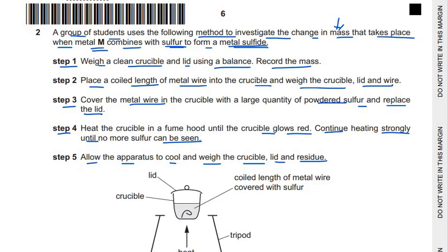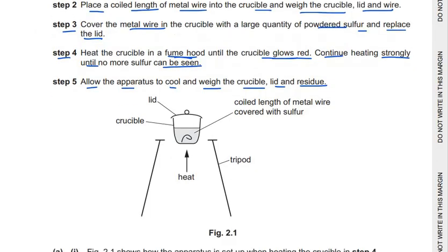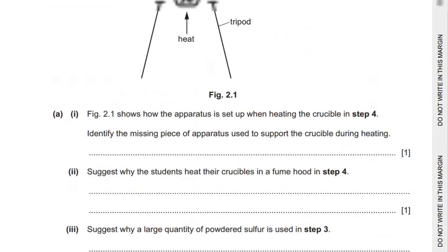To summarize the procedure: we take a clean crucible and weigh it, add the metal wire and weigh again, add a large quantity of sulfur, replace the lid, and heat it in the fume hood until it glows red, continuing until no more sulfur is seen in the crucible. Here is the diagram showing the apparatus setup.